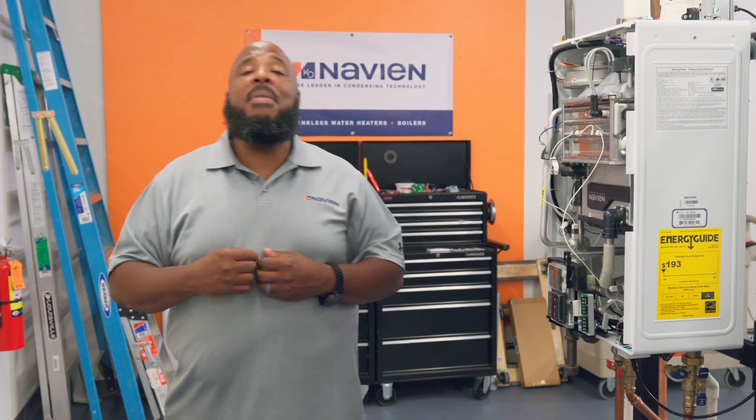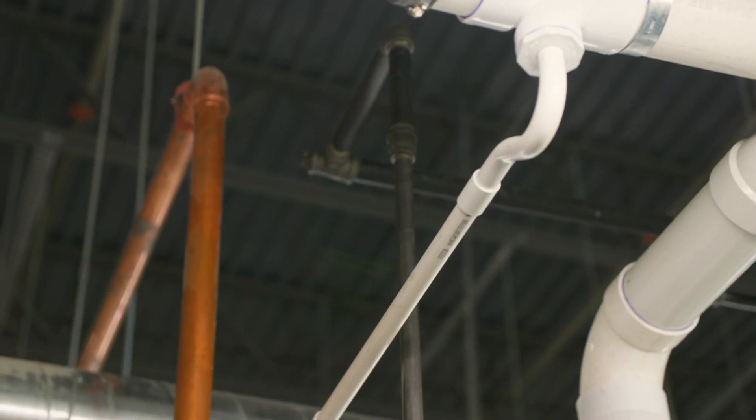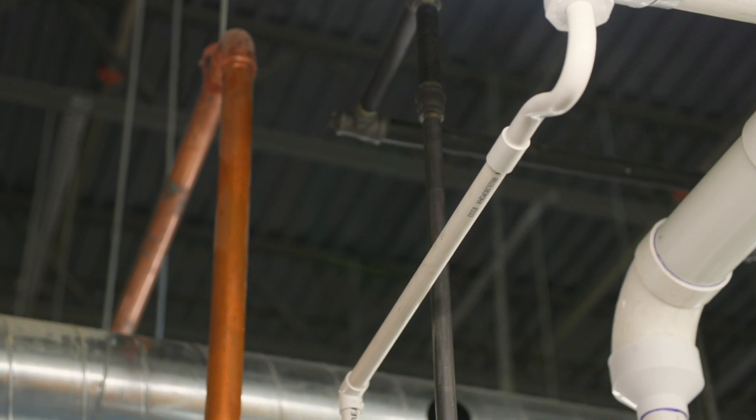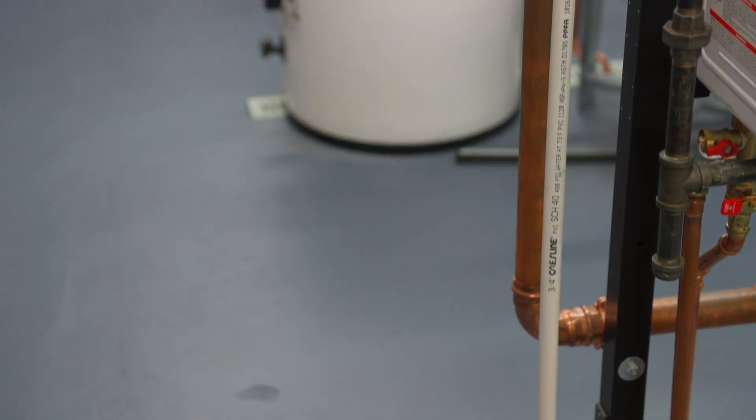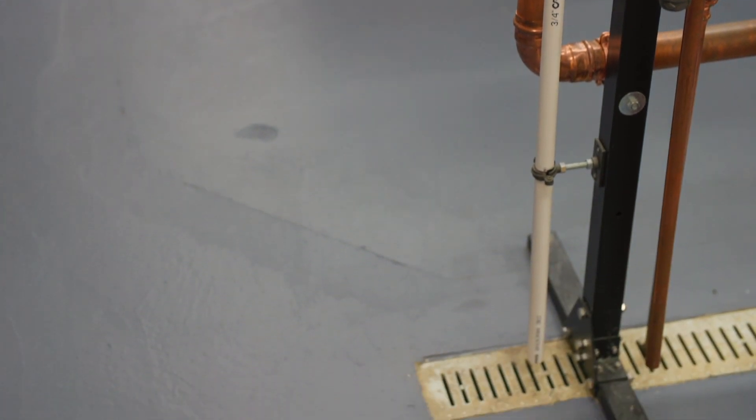One final thing when we're using a common vent header is to make sure that we properly terminate our condensation. We do not want any condensation to build inside of that main header, so we'll just make sure we add an auxiliary termination to dispose of our condensation properly.